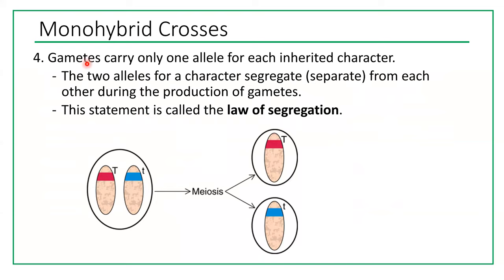The fourth hypothesis: gametes (eggs and sperm) carry only one allele for each inherited character. The two alleles segregate from each other during gamete production — this is called the law of segregation. For example, a cell inside the testis that is heterozygous (big T, little t) will produce sperm each carrying only one allele. About 50% of sperm will carry the dominant allele and 50% the recessive allele. Your parents each give you only one allele per gene — never two.